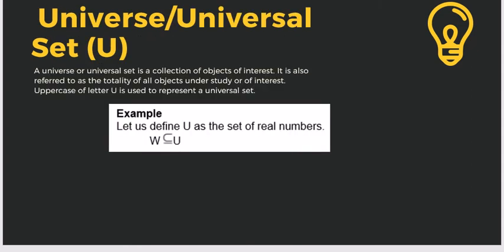Let's have the universal set. A universal set is a collection of all objects of interest — it is referred to as the totality of all objects under study. The uppercase letter U is used to represent the universal set. For example, let us define U as the set of real numbers. So when we say universal, it means the whole. W is still under the universal set, so W becomes a subset of U.